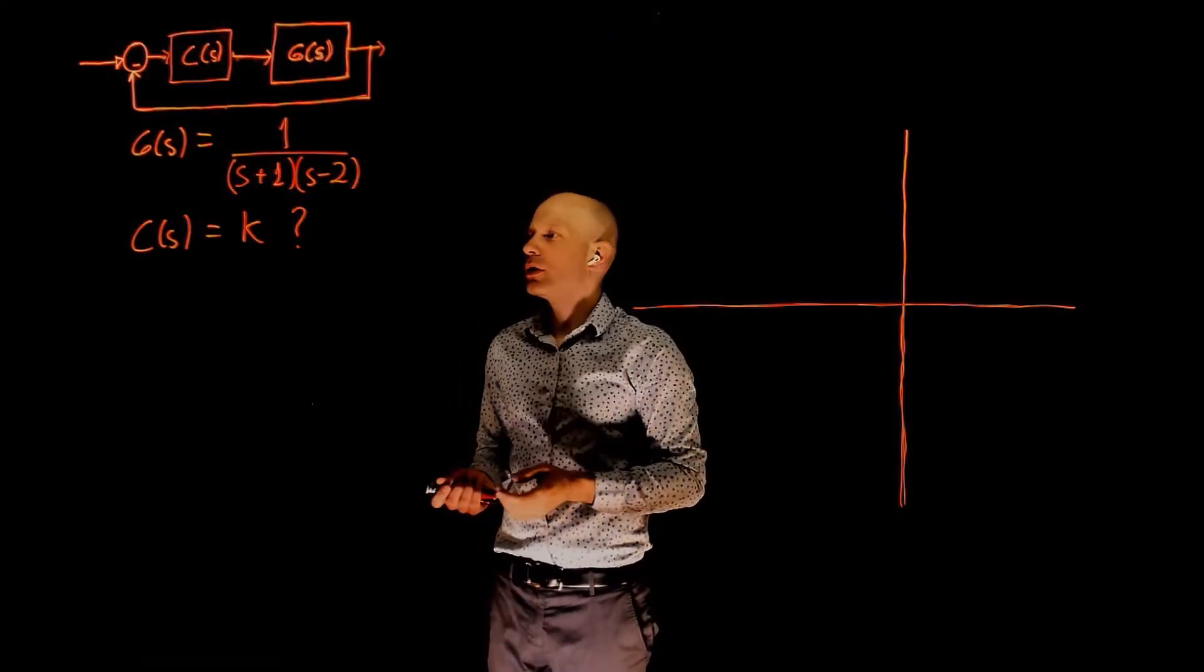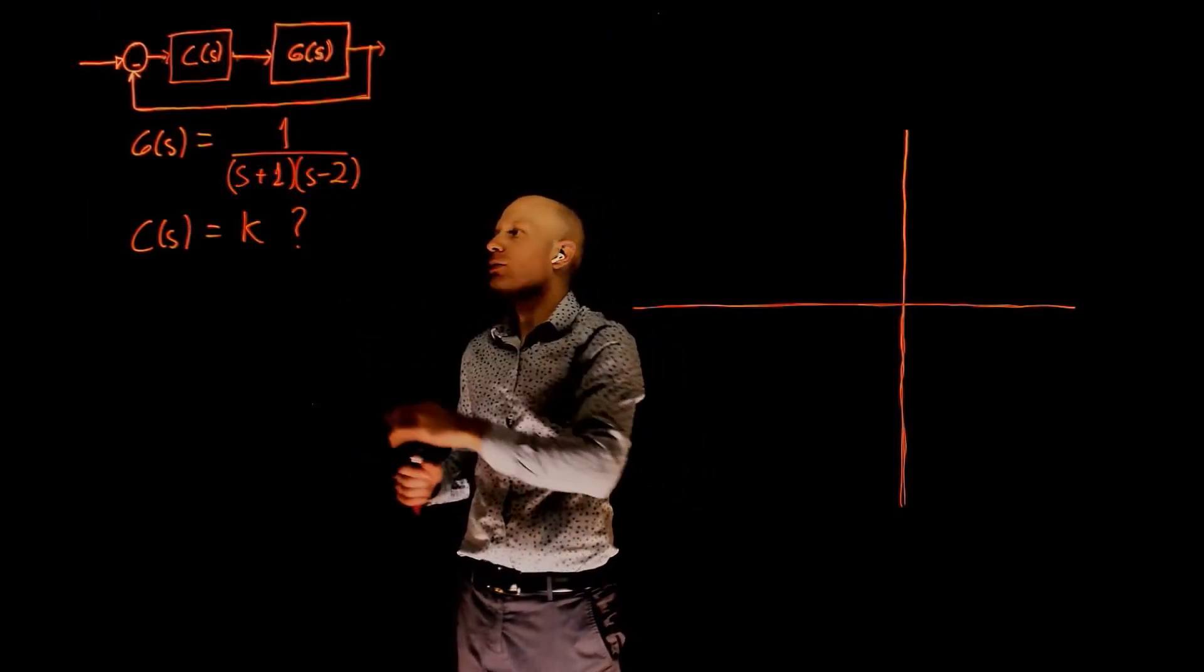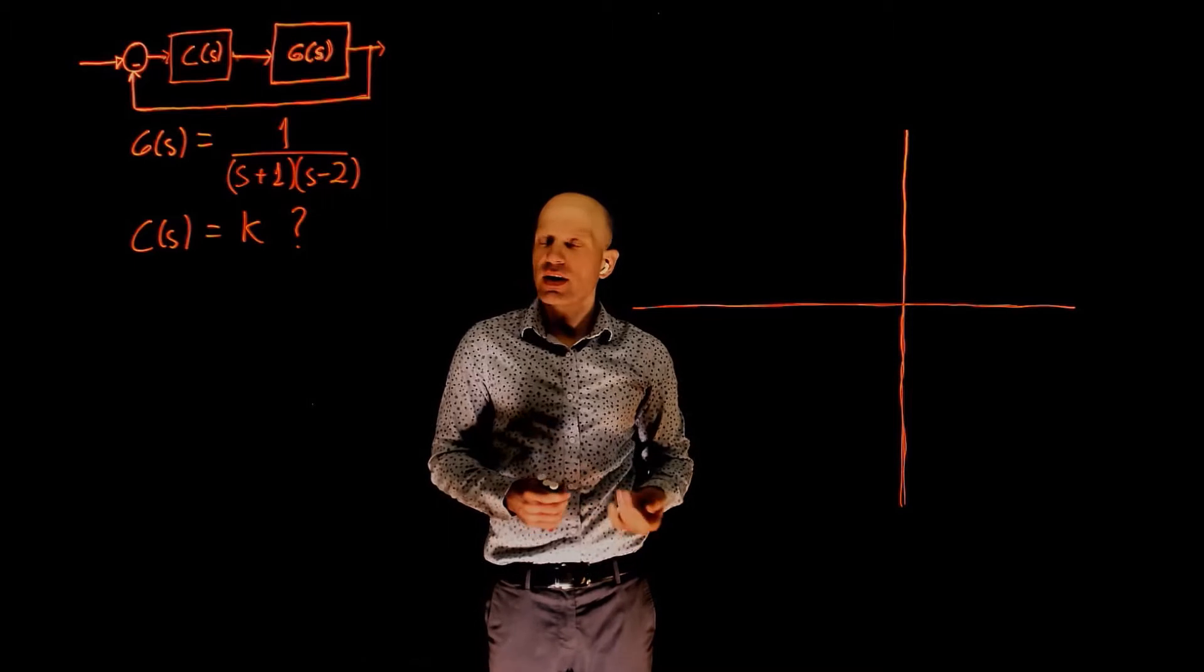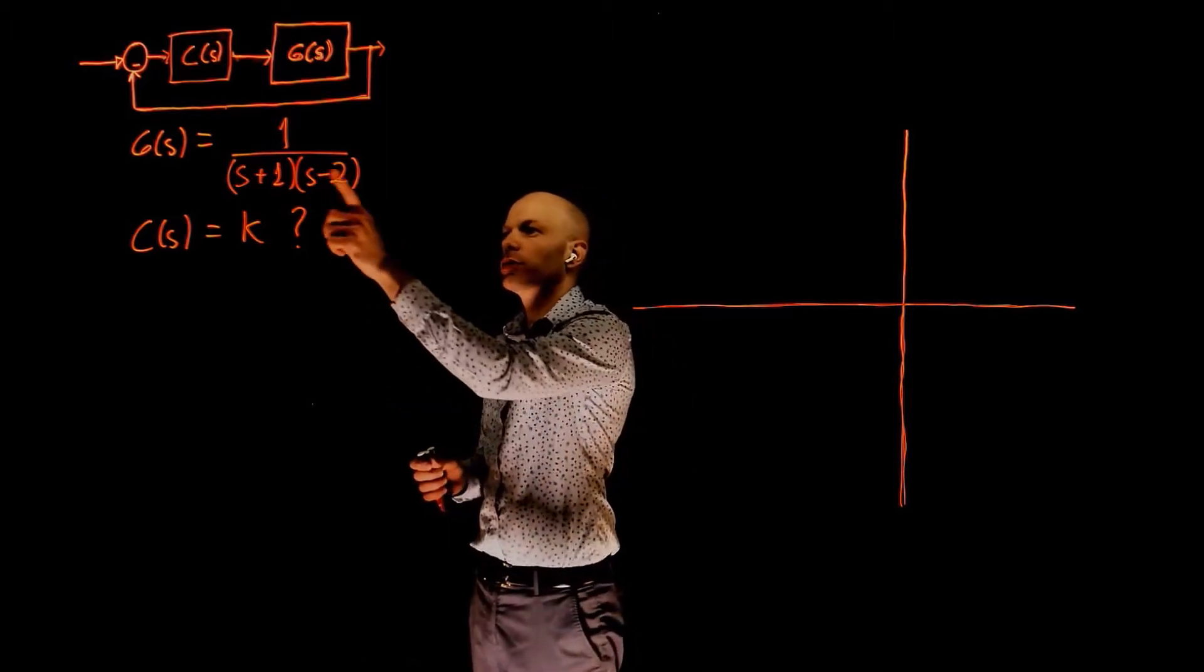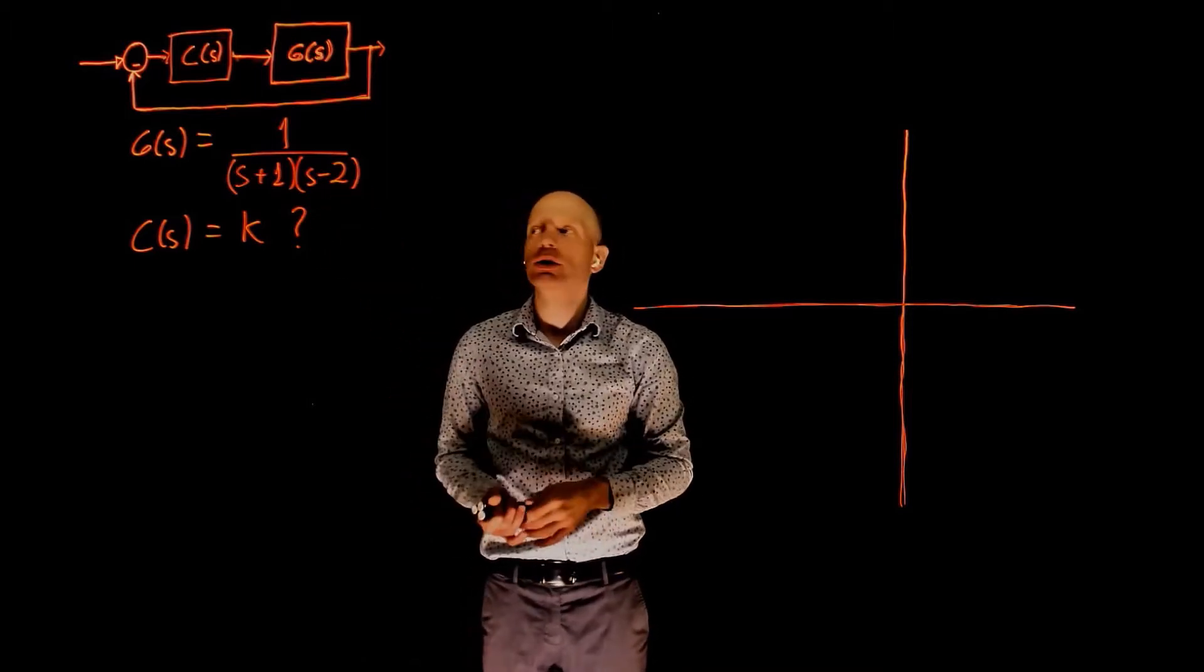In this example, we have created a control system for the unstable plant G of S. G of S is said to be unstable because one of the poles here has a positive real part.